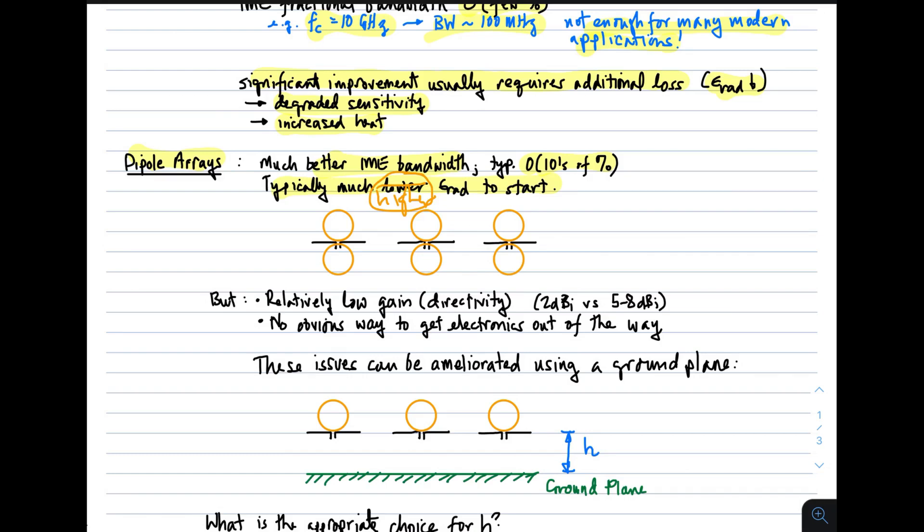The downside of a dipole array, of course, is if you just have dipoles, they're omnidirectional with respect to the axis of the dipole. So you get a lobe up here, and you get a lobe down here. In fact, you get this donut-shaped pattern. There's no obvious way to get the electronics completely out of the way. The other issue is that dipoles have relatively low directivity. So a typical dipole, a half-wave dipole, will have directivity of about 2 dBi. And that's in contrast to somewhere between 5 and 8 dBi for a patch. So you're starting off with a lower directivity. So you need more elements to get the same array directivity. However, these issues can be ameliorated using a ground plane.